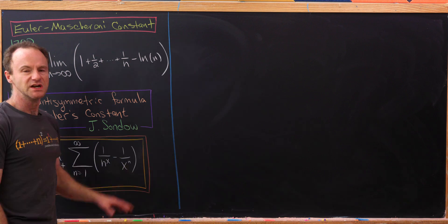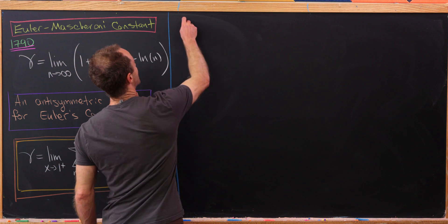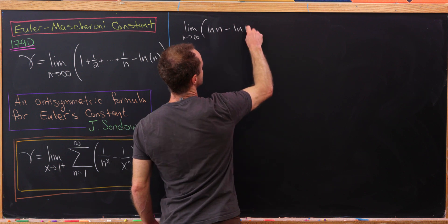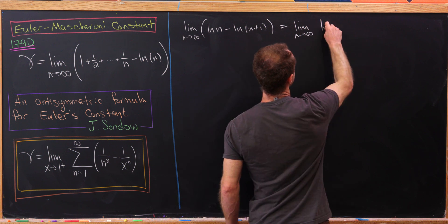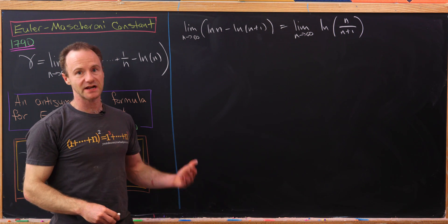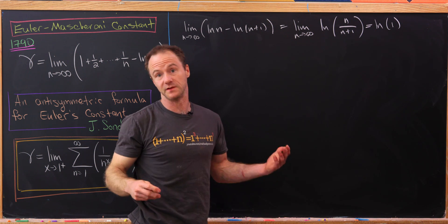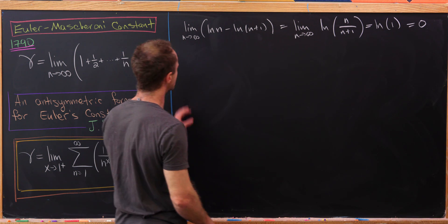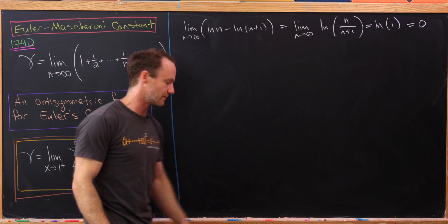The first thing we'll do is a very simple calculation. Let's notice that the limit as n goes to infinity of the natural log of n minus the natural log of n+1 equals the limit of the natural log of n/(n+1). Because the natural log is a continuous function, this is the natural log of 1, which equals 0. This tells us we can replace the natural log of n with the natural log of n+1.